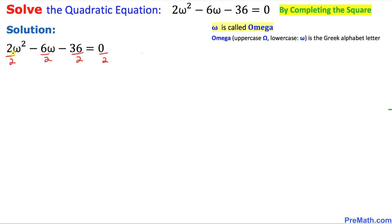If we do that, this 2 and 2 is gone, so we end up with ω² - 3ω - 18 = 0.